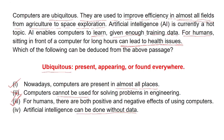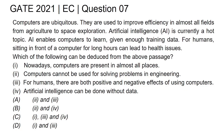Statement 4: artificial intelligence can be done without data. The paragraph states that AI enables computers to learn given enough training data, so data is required. Statement 4 is in total contradiction with the paragraph and is therefore false. Hence, only statements 1 and 3 are true, and the answer to this question is option D: first and third.